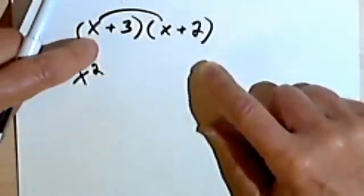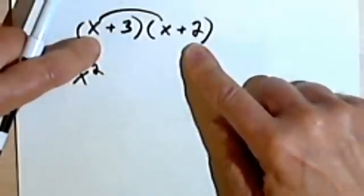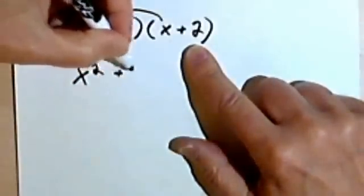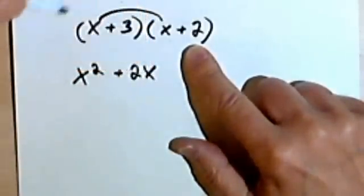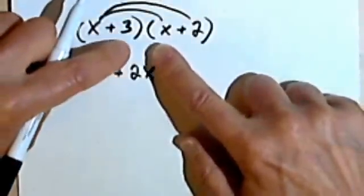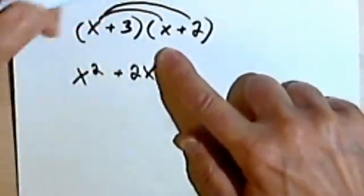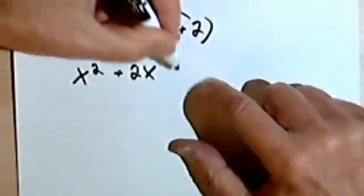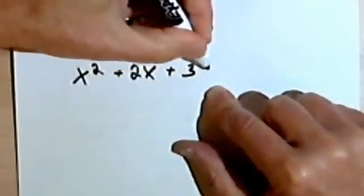And then we're going to take the outside terms, the x and the 2, and multiply those together. We'll get a 2x. We'll take the inside terms, the 3 and the x, and multiply those together. We get a positive 3x.